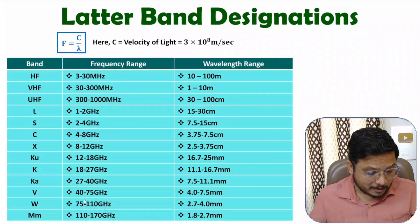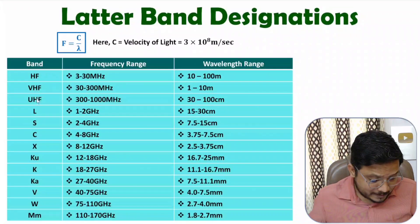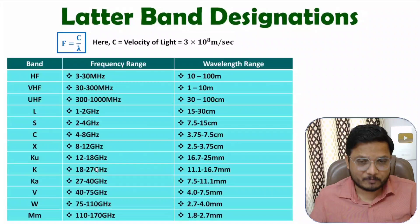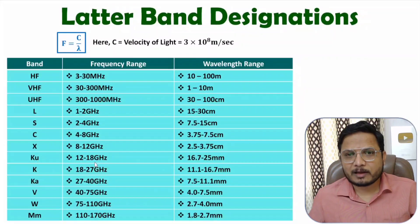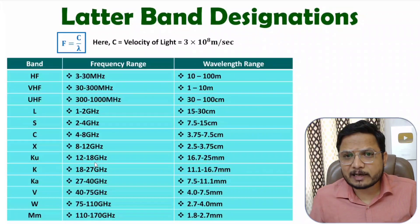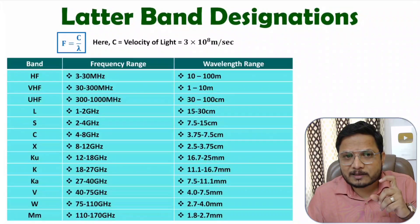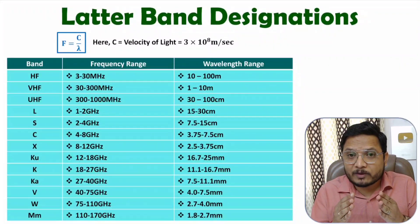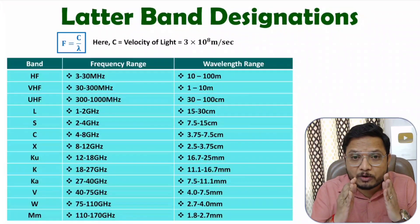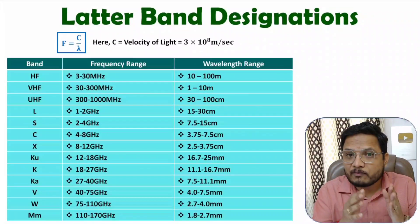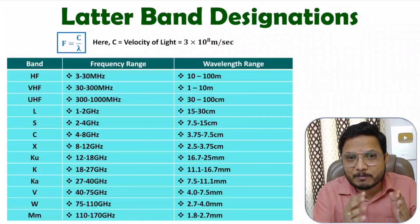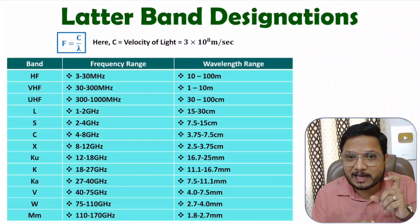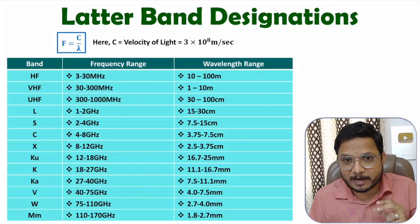So these are the bands with their frequency ranges. This is what you will have to remember. I have seen in interviews questions like: 7 gigahertz belongs to which band? At that time, you should know 8 to 12 gigahertz is X band, and 4 to 8 gigahertz is C band. So 7 gigahertz belongs to C band.